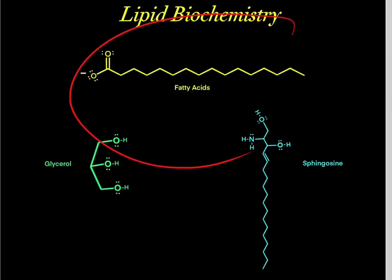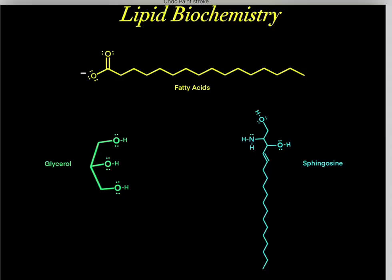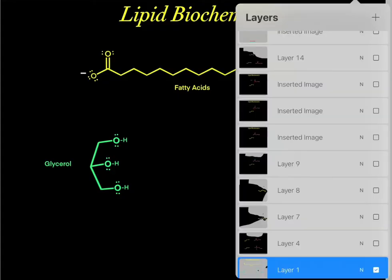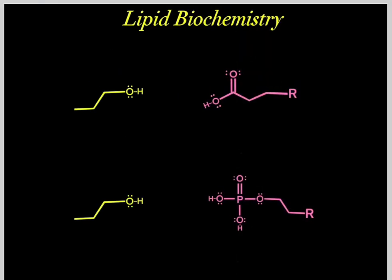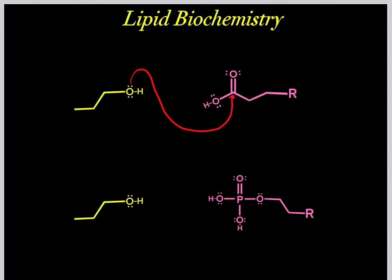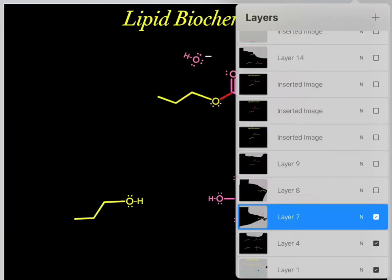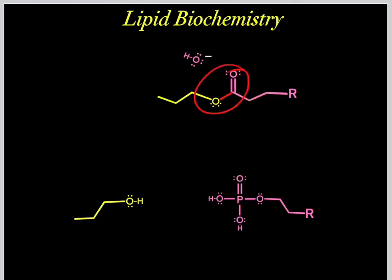In order to understand lipid biochemistry, there are two organic chemistry mechanisms you should be aware of. The first mechanism involves a hydroxyl and a carboxyl. The key idea is that we nucleophilically attack forming a bond, and when we form a bond, we break a bond. These electrons fall on this oxygen and we're left with this product — this ester.